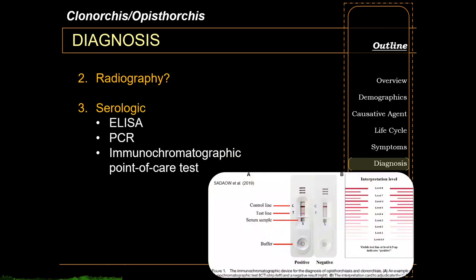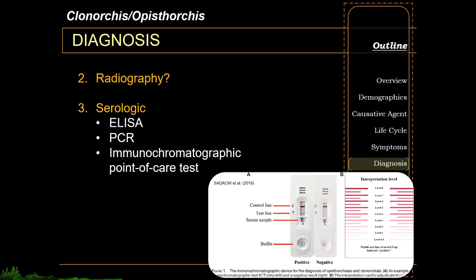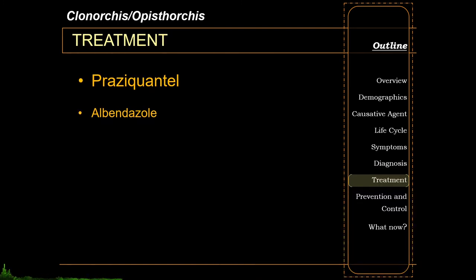Other diagnostic methods include serologic diagnosis including ELISA, PCR, and more recently the use of immunochromatographic point-of-care tests or rapid tests — from a more recent article by Sadaw et al. in 2019. Similar to most fluke infections, Clonorchis and Opisthorchis are treatable using praziquantel. Albendazole has also been used as a second-line drug for this infection.